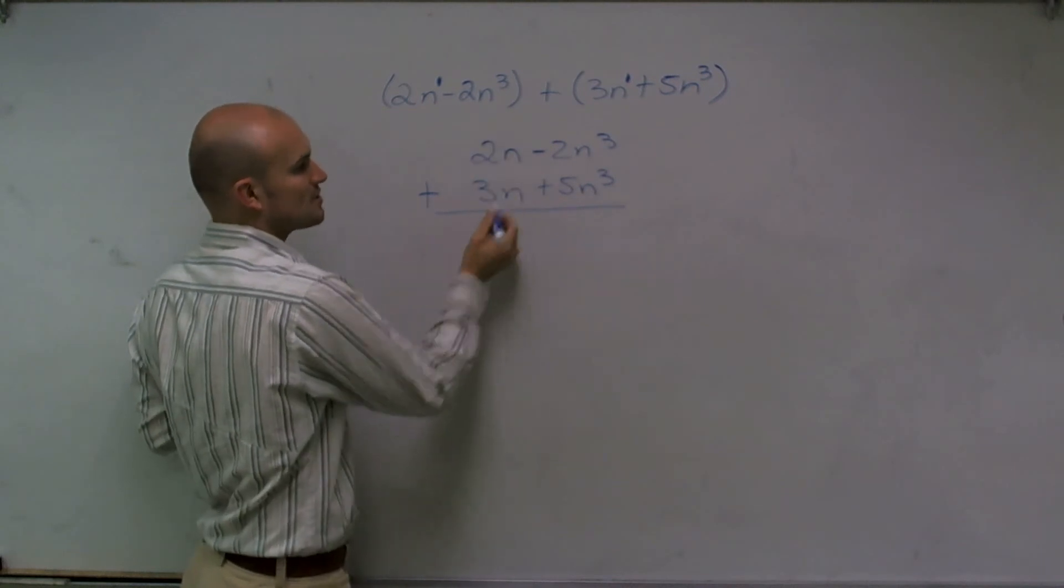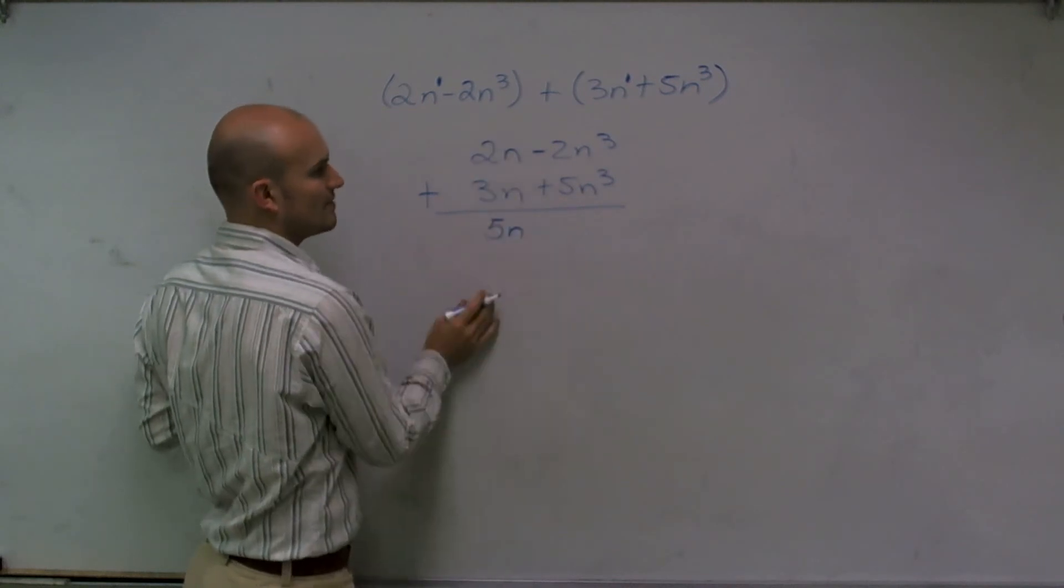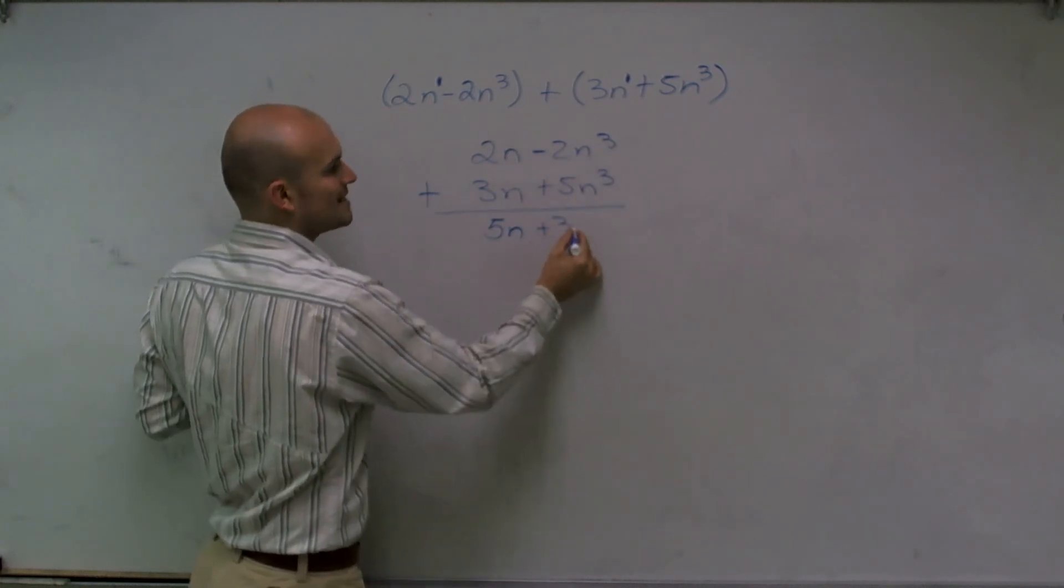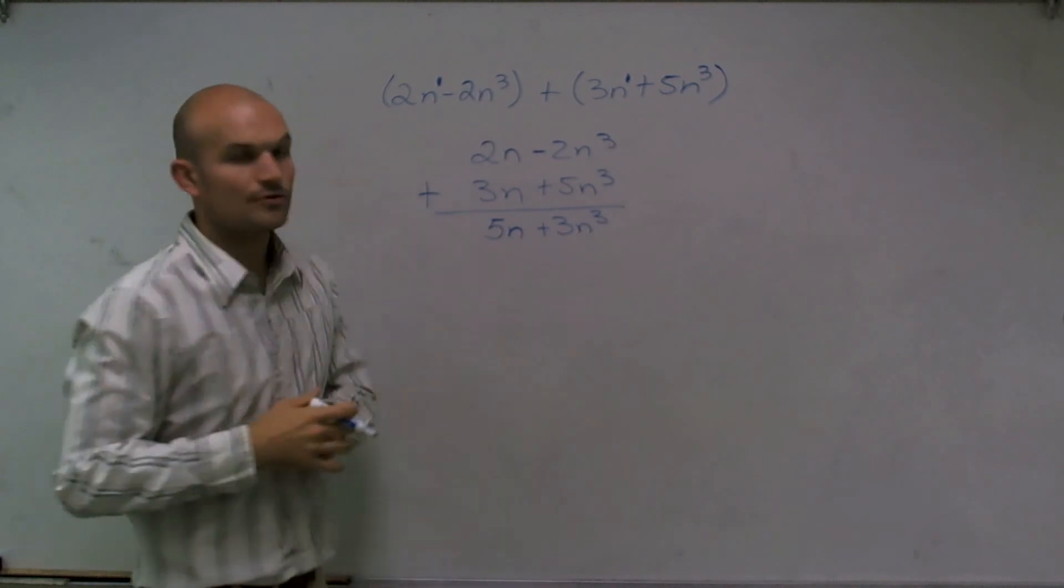2n plus 3n is going to give you 5n. And then negative 2n cubed plus 5n cubed gives you positive 3n cubed.